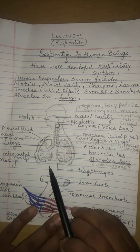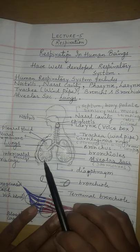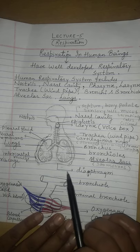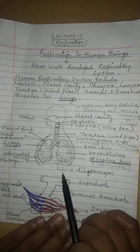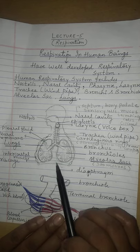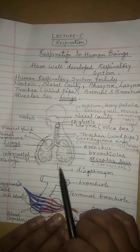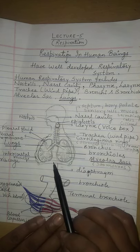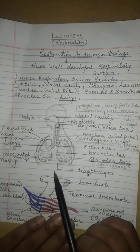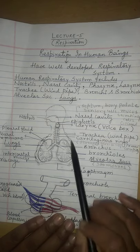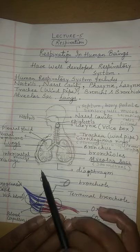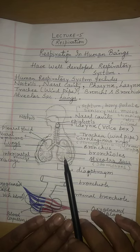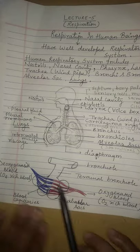The diaphragm is a sheet of muscles on which our lungs rest. The main function of the diaphragm is to separate our chest cavity from our abdominal cavity, and it also functions in the breathing process through its movement — which will be explained in detail later.